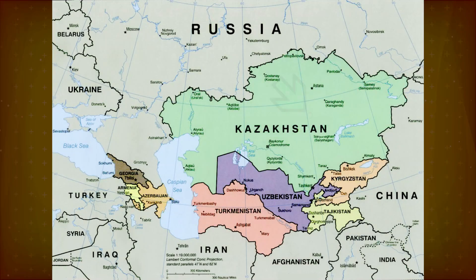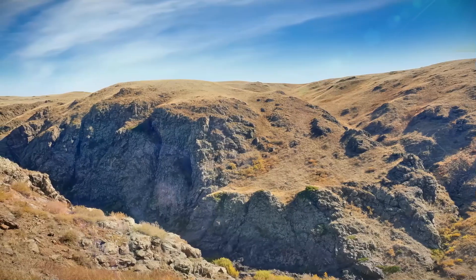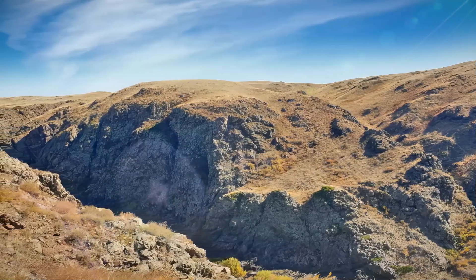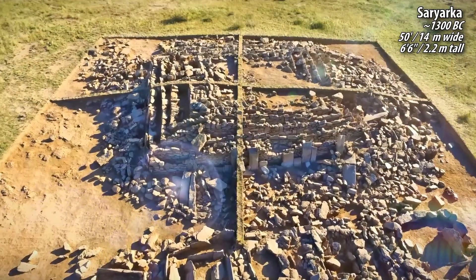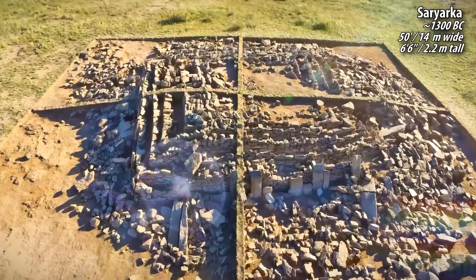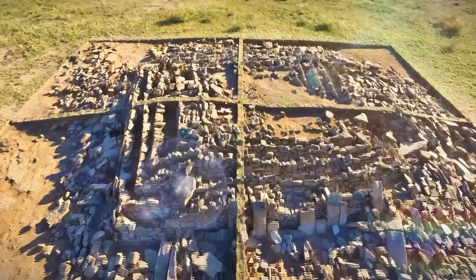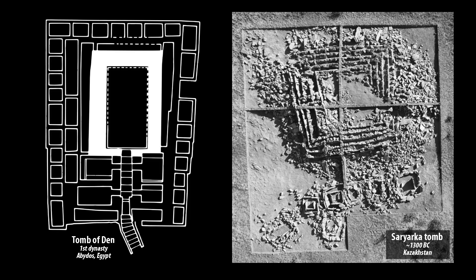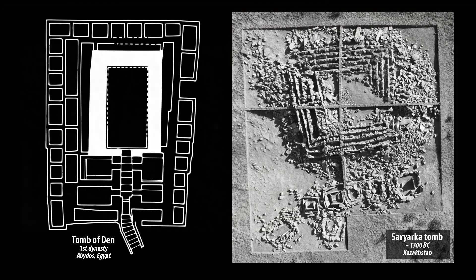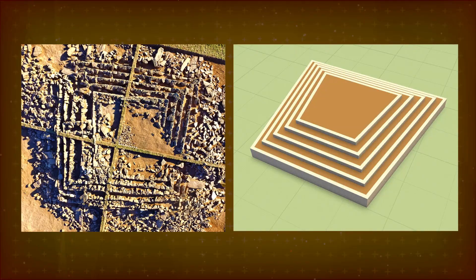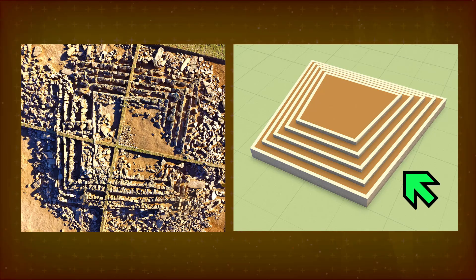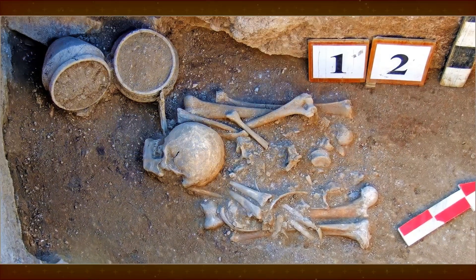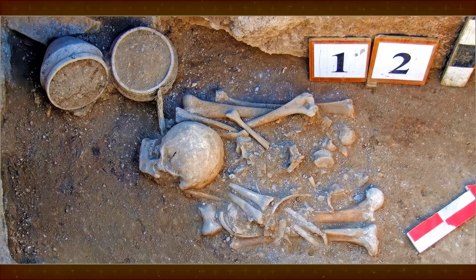One viewer mentioned a Bronze Age tomb in the Saryarka region of Kazakhstan, discovered in 2016. Some use the word 'pyramid,' but it could be a tumulus — a monument within an earthen mound. The lopsided shape recalls some of the First Dynasty tombs in Egypt, which also had trouble marking out proper squares. As the viewer points out, the composition is somewhat like the possible structure of the Great Pyramid shown earlier: a grid of stone walls with filler material in between. By the way, a male skeleton was found in the burial chamber in a very rough sarcophagus.